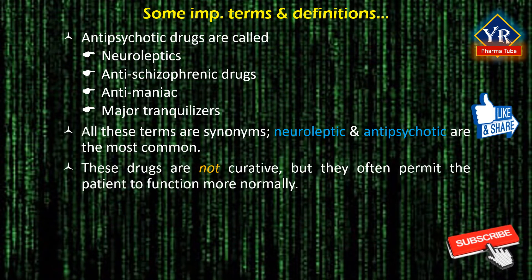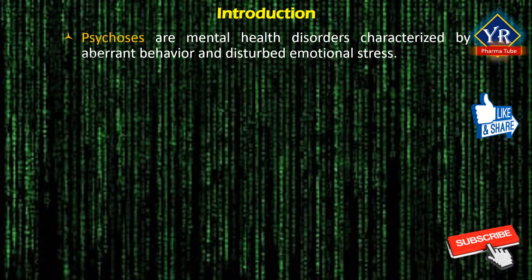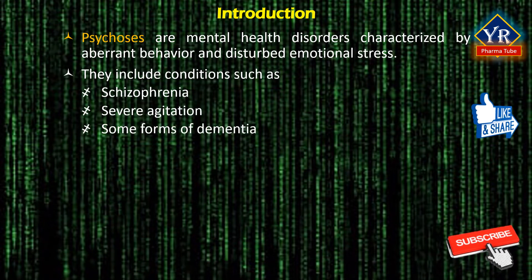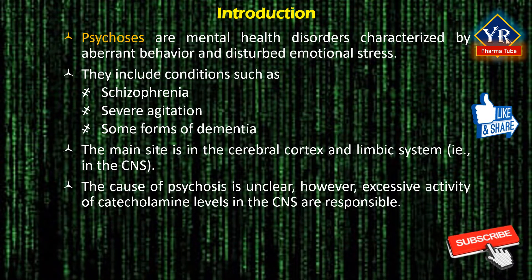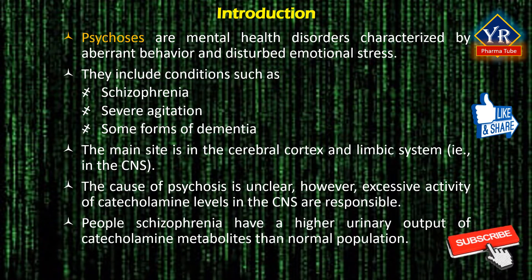These drugs are not curative because they do not eliminate the fundamental thinking disorder, but they often permit the patient to function more normally. Psychoses are mental health disorders characterized by aberrant behavior and disturbed emotional states. They include conditions such as schizophrenia, severe agitation, and some forms of dementia. The main site of action of antipsychotic drugs is on neural pathways involving the cerebral cortex and limbic system. The cause of psychosis remains unclear; however, excessive activity of catecholamine levels in the cortical and limbic systems appears to be responsible in the development of schizophrenia and other psychosis. It has been known that people with schizophrenia have a higher urinary output of catecholamine metabolites than the general population.